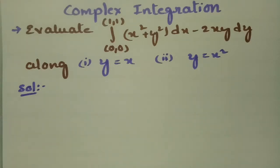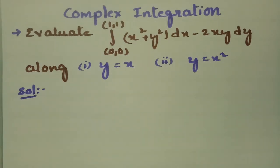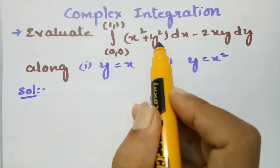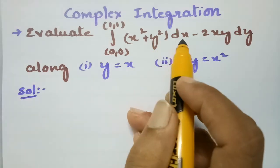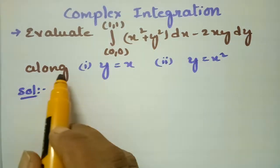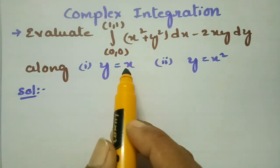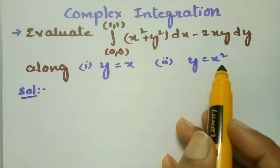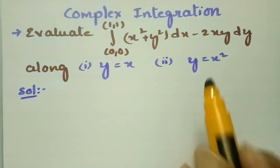In today's video, I am going to give the solution for the most important problem from complex integration. We have to evaluate the integral from (0,0) to (1,1) of (x² + y²)dx minus 2xy dy, along y = x and the next curve y = x².